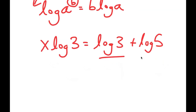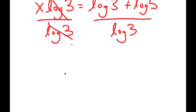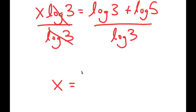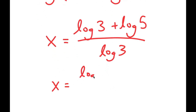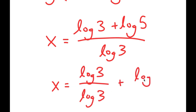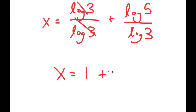Now from here, I'm going to divide both sides by log 3. For my left-hand side, these two cancel out. And from my right-hand side, I get x is equal to log 3 plus log 5 over log 3. This is the same thing as log 3 over log 3 plus log 5 over log 3. Log 3 and log 3 cancel out, so I get x is equal to 1 plus log 5 over log 3.